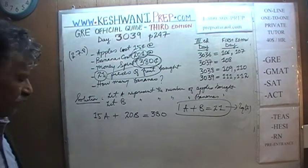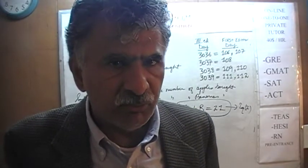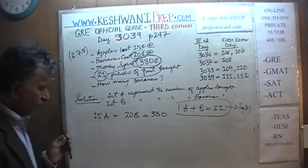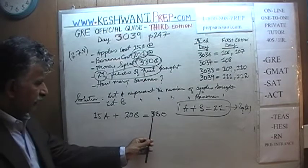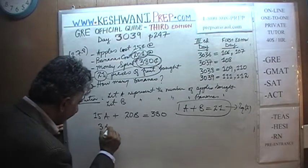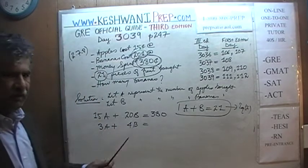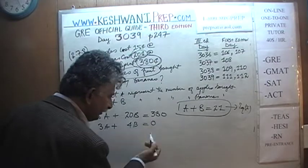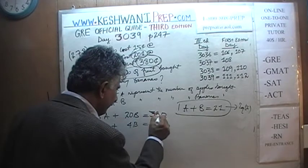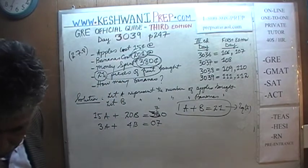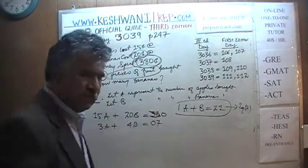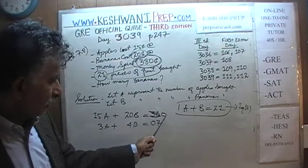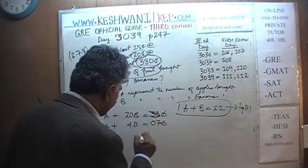Before doing anything else, let's reduce this equation. Whenever possible, always reduce first — it creates less work. Let's divide the entire equation by 5: 15 is divisible by 5, and so are 20 and 380. 15 divided by 5 is 3; 20 divided by 5 is 4. For 380 divided by 5: 38 has 7 fives (7×5=35), remainder 3; bringing down the 0 gives 30, which has 6 fives. So 380 ÷ 5 = 76. Our reduced equation 1 is: 3A + 4B = 76. And equation 2 is: A + B = 21.